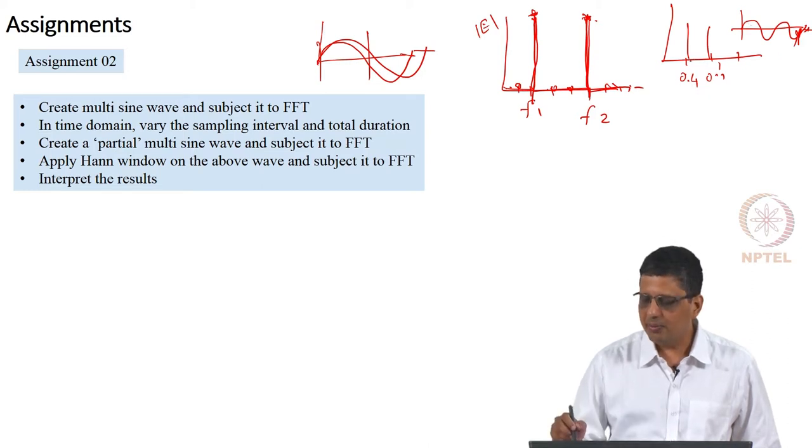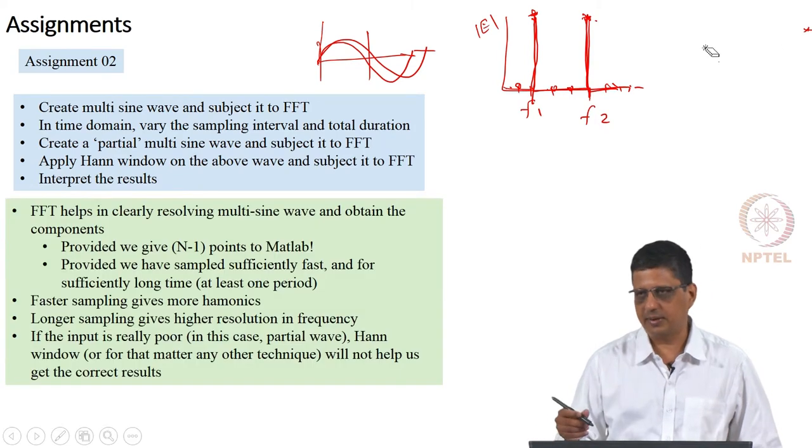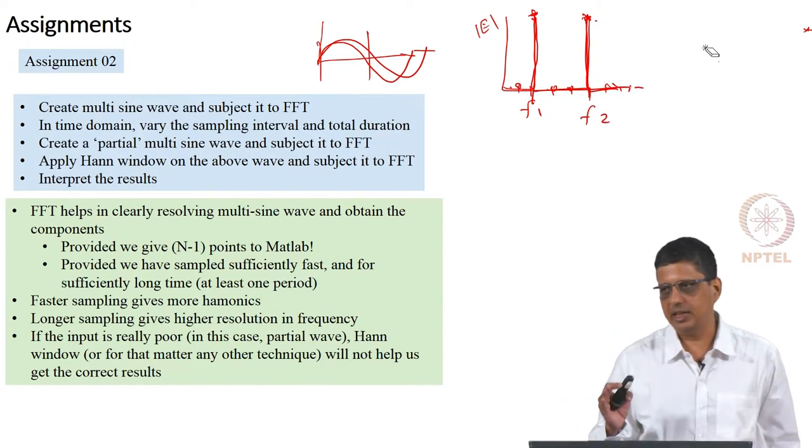You will not even get 0.4, 0.5 in the FFT. I think you would have, if it is 1 second, you would have got 1 hertz, 2 hertz, 3 hertz, etc. But in the best case scenario, what we look for is 0.4, 0.5, I want to say these are there.